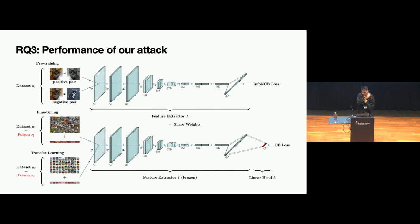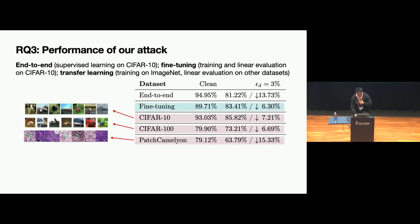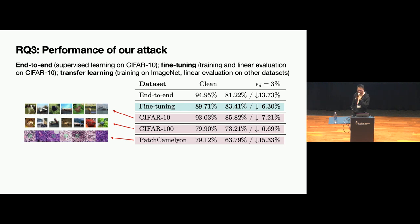This concludes research question two: we propose two kinds of attacks to poison fixed feature extractors during fine-tuning. Next, we examine the attack performance on two downstream tasks. We acquire our fixed feature extractor using a popular method called contrastive learning, then perform fine-tuning on the same dataset and transfer learning to other datasets. We compare three settings: end-to-end supervised training, fine-tuning with a fixed encoder evaluated on CIFAR-10, and transfer learning by training on ImageNet and transferring to CIFAR-10, CIFAR-100, and the medical dataset Patch Camelyon for tumor classification.